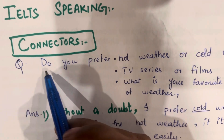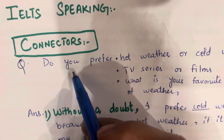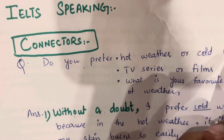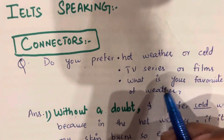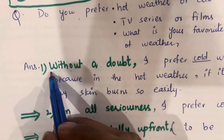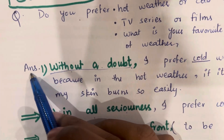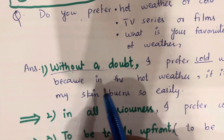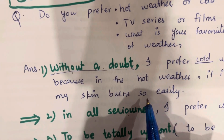If the examiner asks a question like 'do you prefer hot weather or cold weather?' or 'do you prefer TV series or films?', you can start your answer by using these connectors. For example: 'Without a doubt, I prefer cold weather because in hot weather, if it's sunny, my skin burns so easily.'